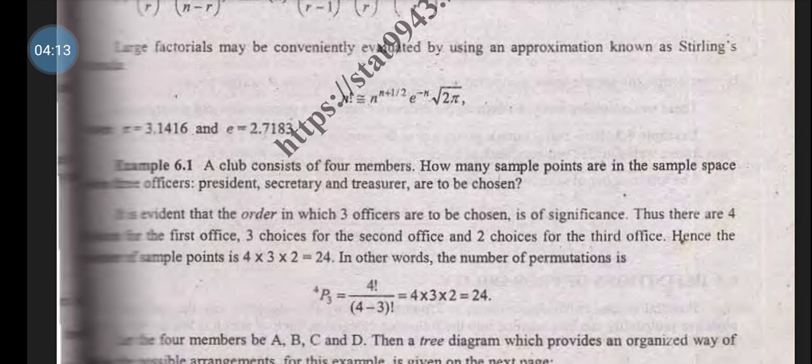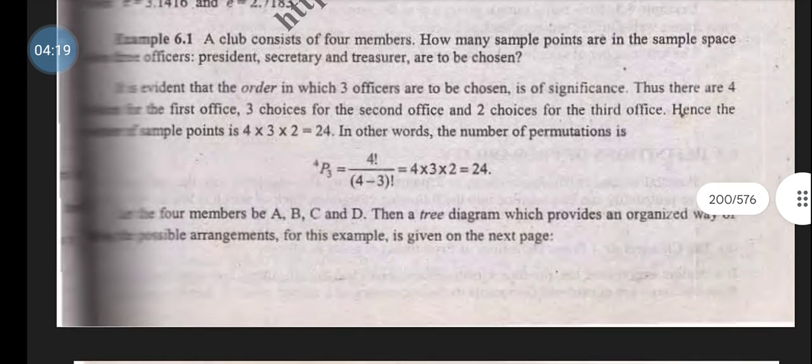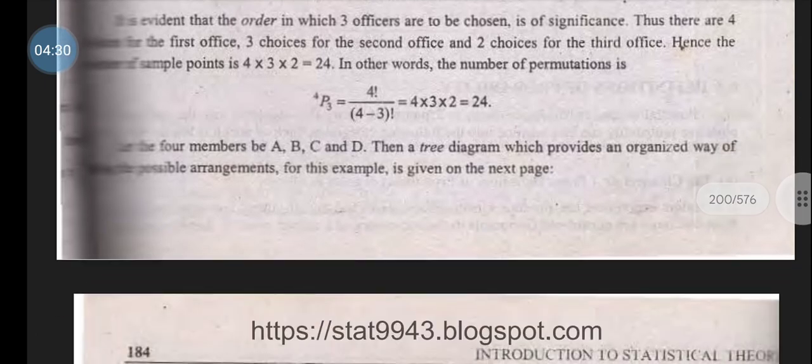Example: A club consists of four members. How many sample points are in the sample space for selecting a president, secretary, and treasurer? We calculate 4P3 equals 4! over (4-3)! equals 4 times 3 times 2 equals 24.